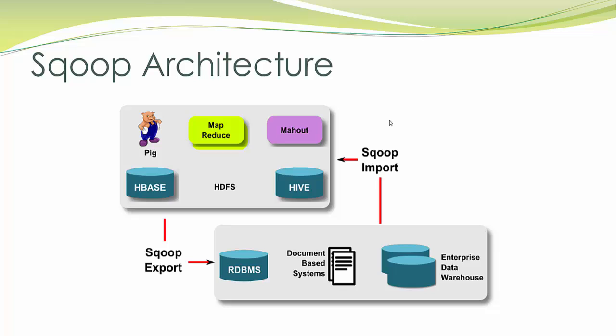Sqoop's export process reads a set of delimited text files from HDFS in parallel, parses them into records, and inserts them as new rows in the target database table for consumption by your reporting applications. Not only this — using Sqoop you can customize the queries you want to execute, or without that, Sqoop is going to build its own query based on the primary key in your table.